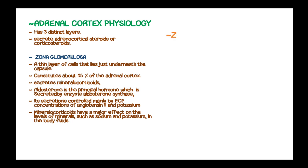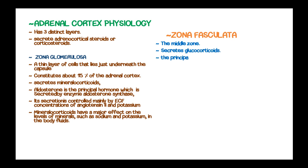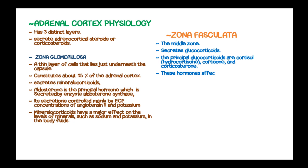The second layer is the zona fasciculata, which is the middle zone. It secretes glucocorticoids, and the principal glucocorticoids are cortisol, known as hydrocortisone, cortisone, and corticosterone. These hormones affect glucose metabolism.